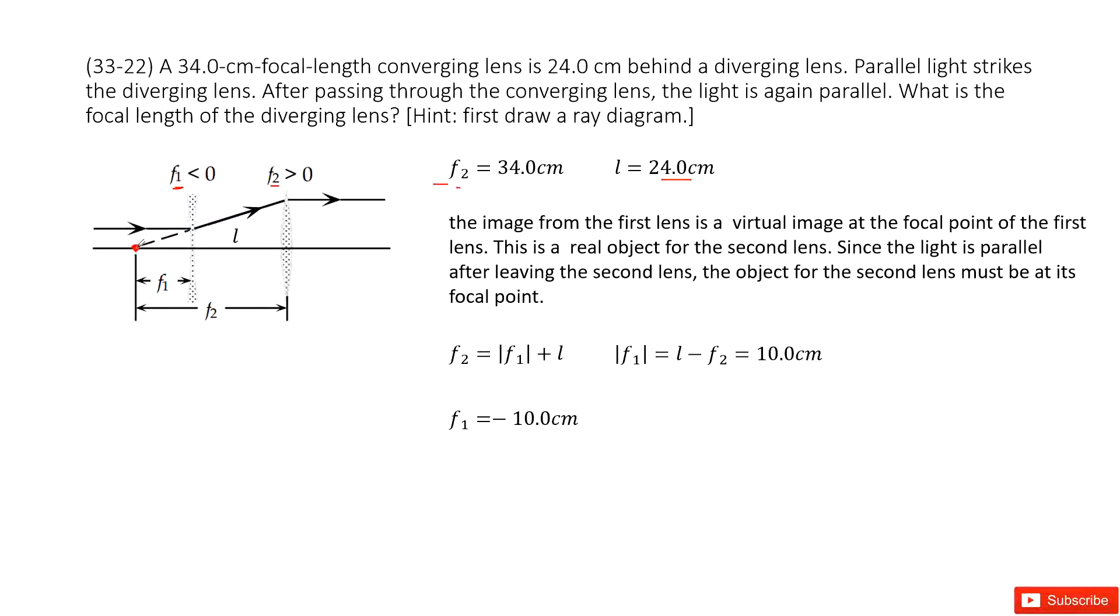This is a focal lens. So this one is a focal point for F1. So we can see the distance for this one, we call it F1. This is a focal lens for F1. If the light comes out as parallel, so that means its object is just at its focal point. So that means this point is a focal point for F1 and a focal point for F2.